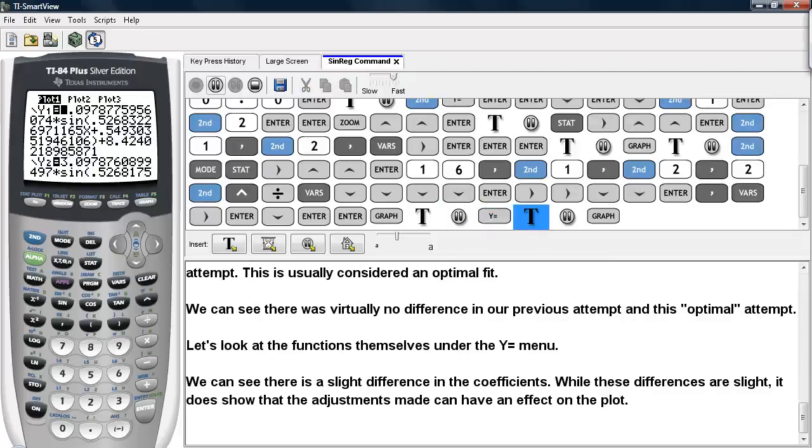So we'll hit y equals. And here we can see that there's a slight adjustment in the a value. And again there will be another slight adjustment in b, c, and d as well. So here we have 3.0978775 for our first attempt. In the quote unquote optimal attempt we have 3.0978760899. So there are some slight variations between our first attempt and this optimal attempt. But for our purposes here these things are virtually the same.